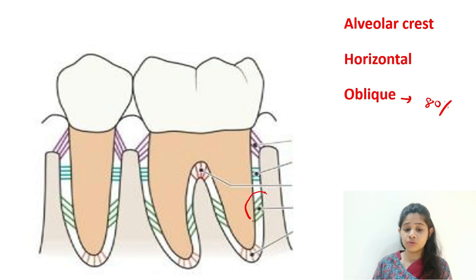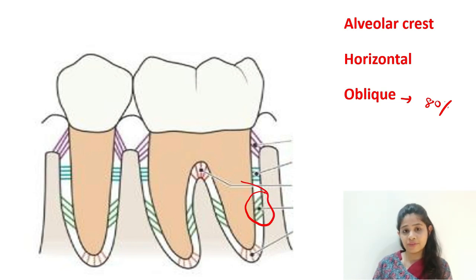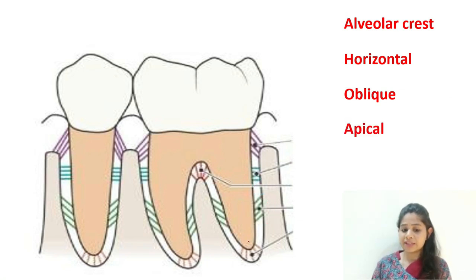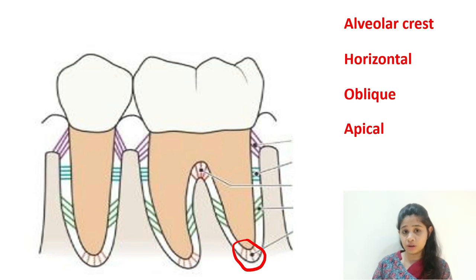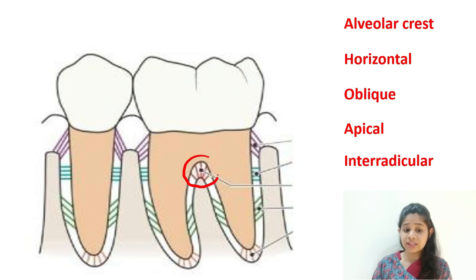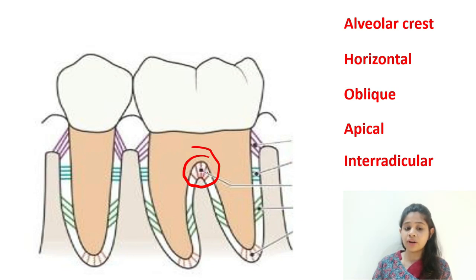The oblique fibers extend from the root cementum towards the alveolar bone in a coronal direction. The next set are the apical fibers, present in the apical area and only formed after the tooth completely erupts into occlusion. The last group is the interradicular fibers, which are only present in multi-rooted teeth as they are located in the furcation area. These fibers fan out and help in the attachment of the root cementum in the furcation area to the alveolar bone.